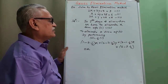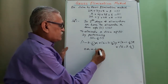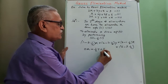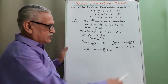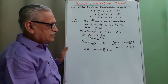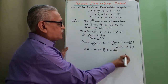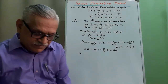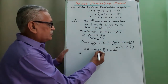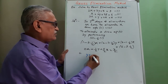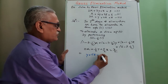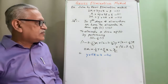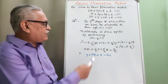We get 4 minus 3 gives 1 by 2 into y, and 6 minus 1 gives 5 by 2 into z, equal to 12 minus 9 gives 3 by 2. Multiplying throughout by 2, the new equation is y plus 5z equals 3. We call this new equation number 4, replacing equation 2. Here, x has been eliminated by performing this step.